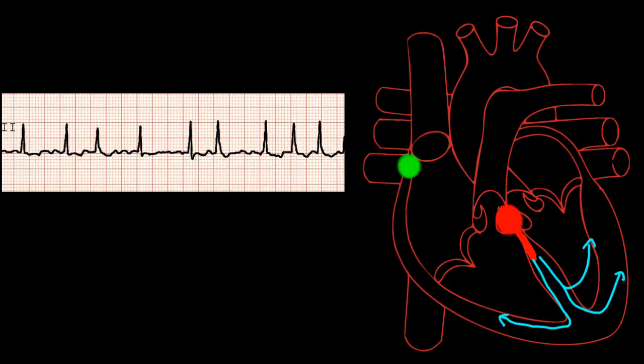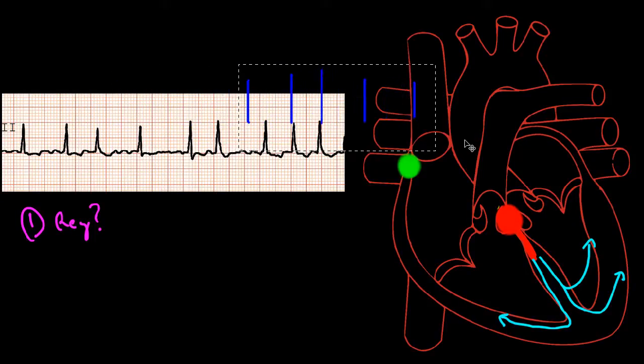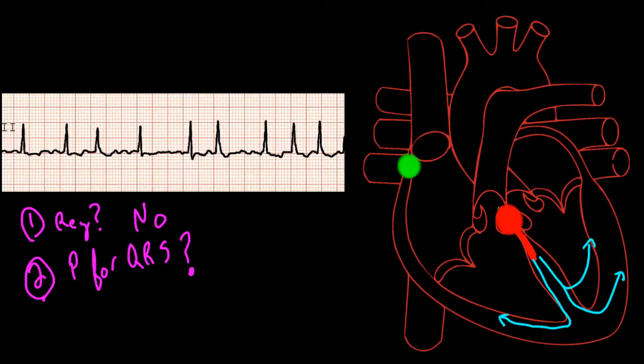Let's look at our third EKG. Again, let's start by asking ourselves the same questions. First, is it regular or irregular? So we can get out our calipers or draw our lines on a sheet of paper again. And if we notice, no matter how we line up the lines, the rhythm doesn't line up perfectly anymore. Second, we'll ask ourselves if there's a P for every QRS and a QRS for every P. Look and try and see any regular P waves. But overall, the atrial activity is completely disorganized. There are some places that look organized, but nothing consistent. So there's no organized P wave activity. This is atrial fibrillation.